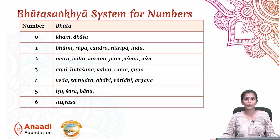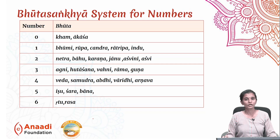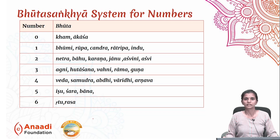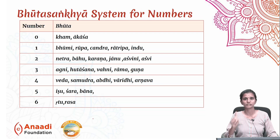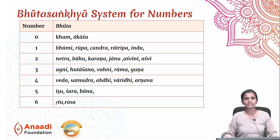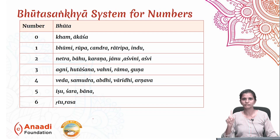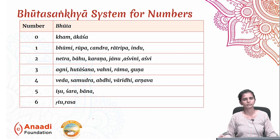For one, we have Bhumi, Rupa, Chandra, Ratripa, and Hindu. The word Bhumi represents one because we have only one earth. Not just Bhumi, but all synonyms of the word — for example, Prithvi also means earth and represents one. Similarly, Chandra represents one because we have only one moon. Ratripa and Hindu are also synonyms of moon, so they represent one.